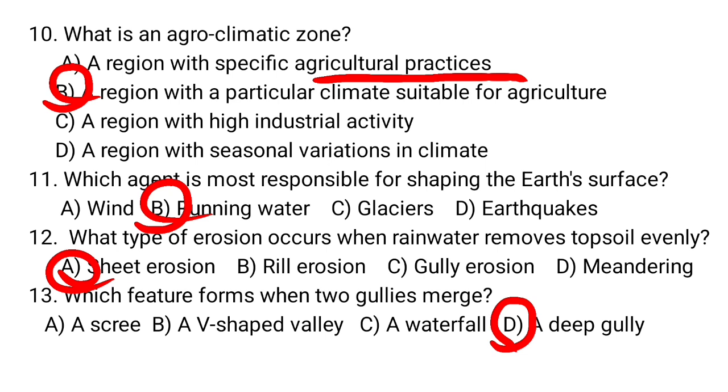Question number fourteen: Which landform is typical of a river's upper course? A. Flood plain. B. Delta. C. Gorge. D. Oxbow lake. Question number fifteen: Which erosion process is most common in deserts? A. Sheet erosion. B. Frost action. C. Wind erosion. D. Glacier erosion.